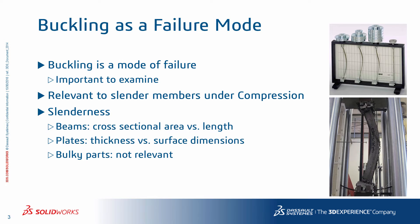Typically, buckling is relevant to slender members under compression. Let's talk about the concept of slenderness. If you are dealing with structural members like beams and trusses, slenderness is signified by the cross-sectional area versus length. The smaller the cross-section and the longer the beam, the more slender it will be and therefore more susceptible to buckling if under compression.